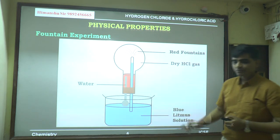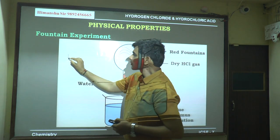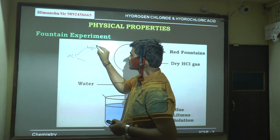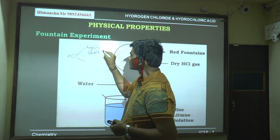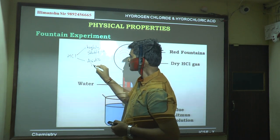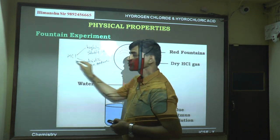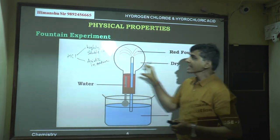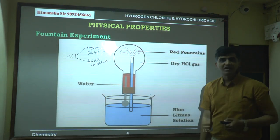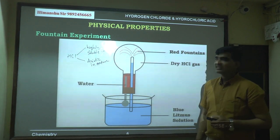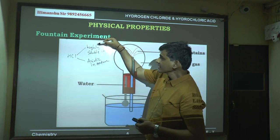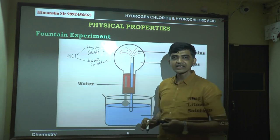We will now prove two properties of HCl gas using the fountain experiment, which is a 2-3 mark question. The two properties are: (1) HCl is highly soluble in water, and (2) HCl is acidic in nature.